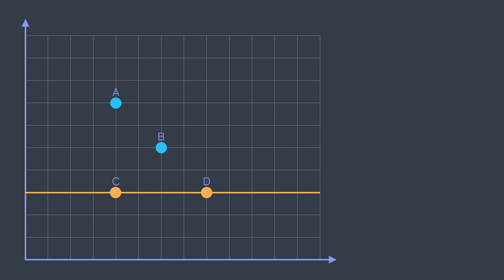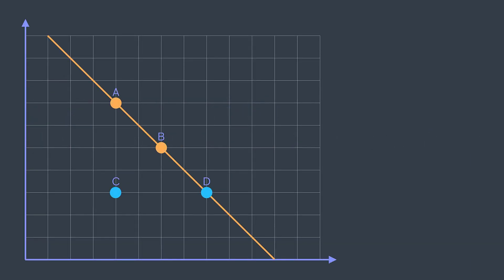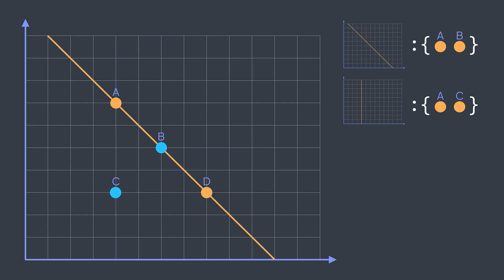We want to find the line that passes from the most points. So we can think of a hash table where the key is a line and the value is a set of points that it passes by. To fill it, we traverse couples of points. For each one of them, we find the common line and add the two points to its set. For example, for the couple AB, their common line is this one, so we add A and B to its points in the hash table. For the couple AC, their common line is this one, so we add A and C. Then for the couple AD, their common line is the same as for AB. This is why A and D will be added to the same line, which now has three points: A, B, and D.